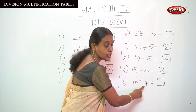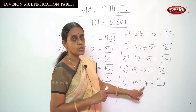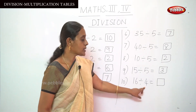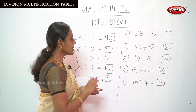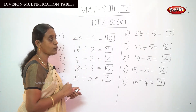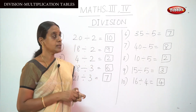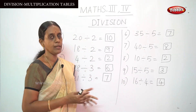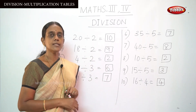For the last sum, 16 divided by 4, say the 4 table: 1 4 is 4, 2 4's are 8, 3 4's are 12, and 4 4's are 16. So the answer will be 4. This is an easy way to find out the answer for a division sum by simply saying your multiplication table. This is at the level of third standard. Next, we are going to learn the terms used in division sums.